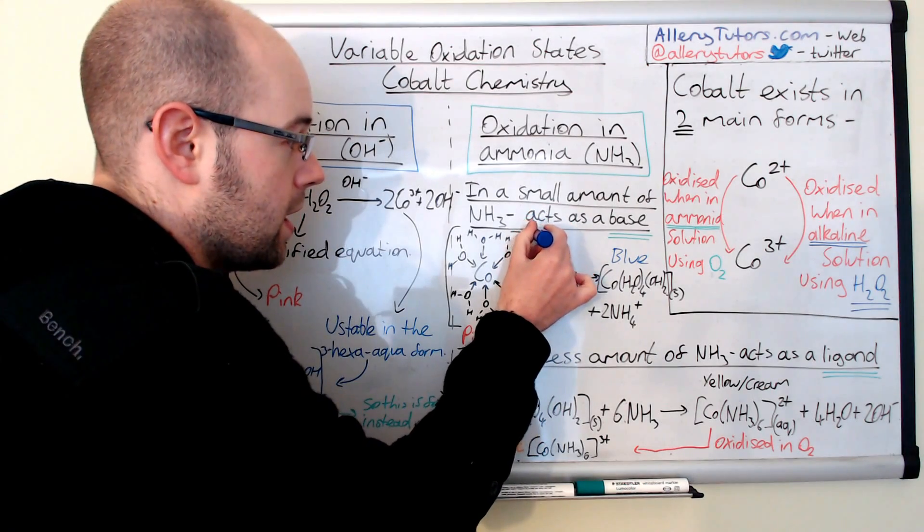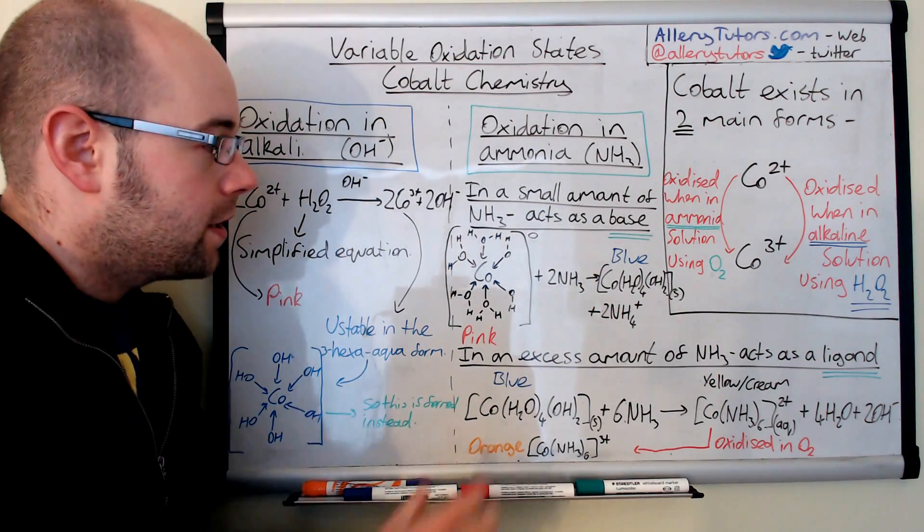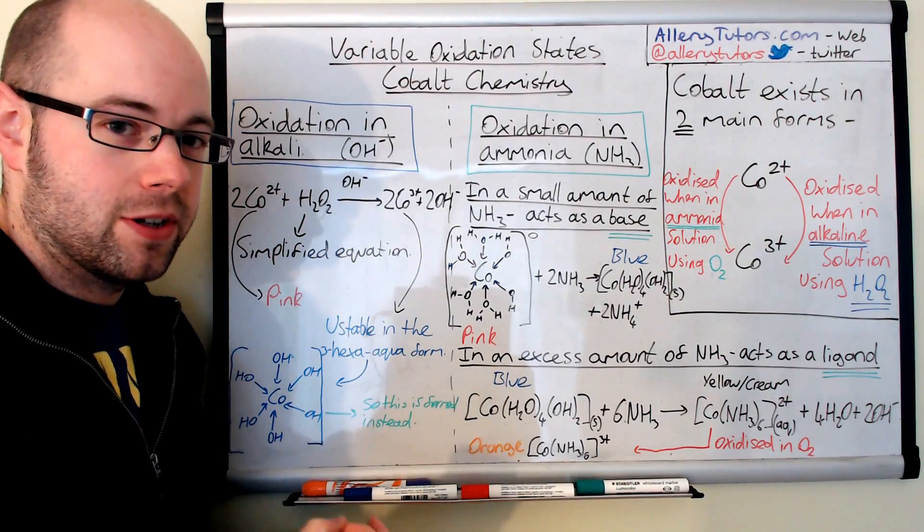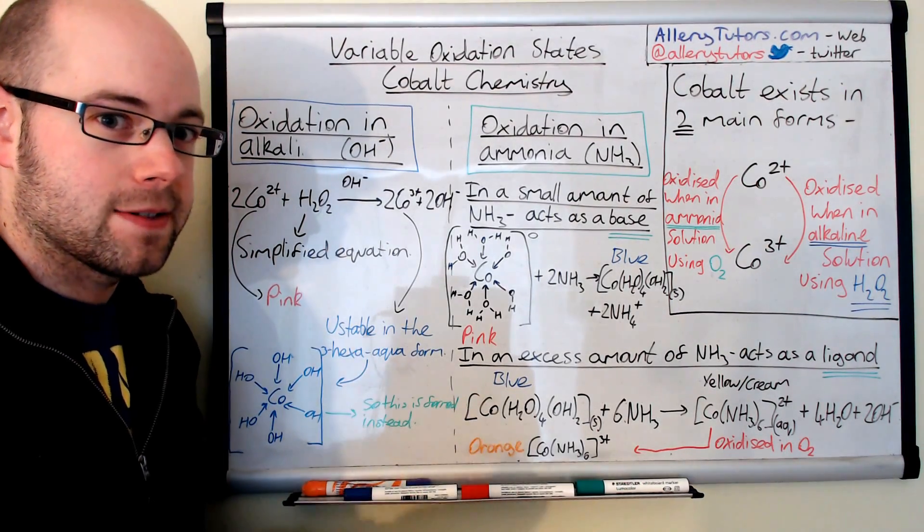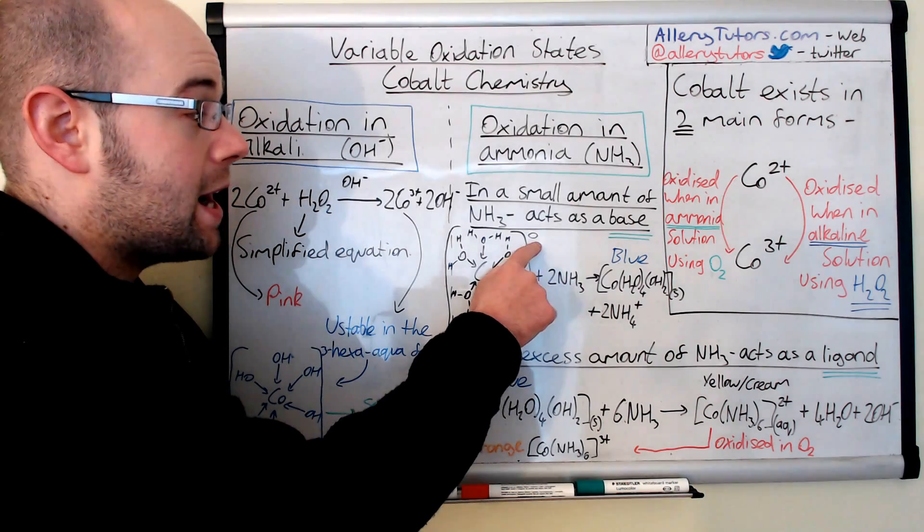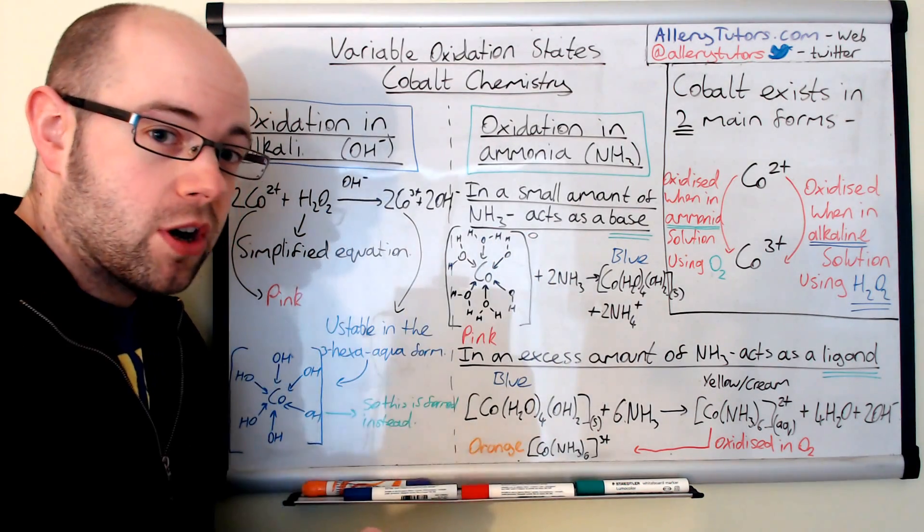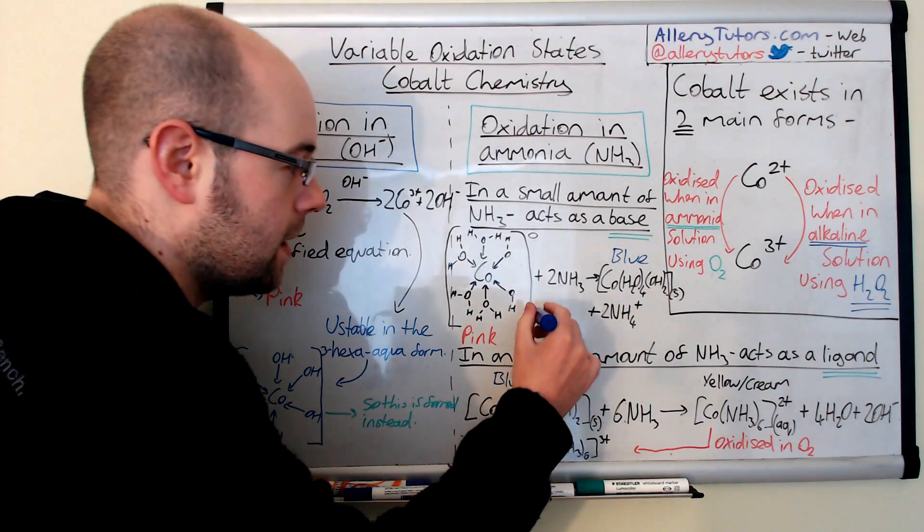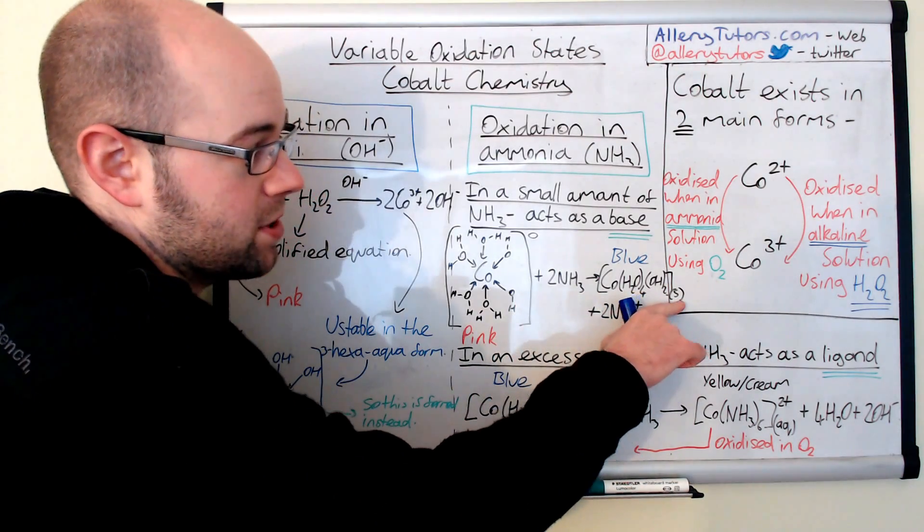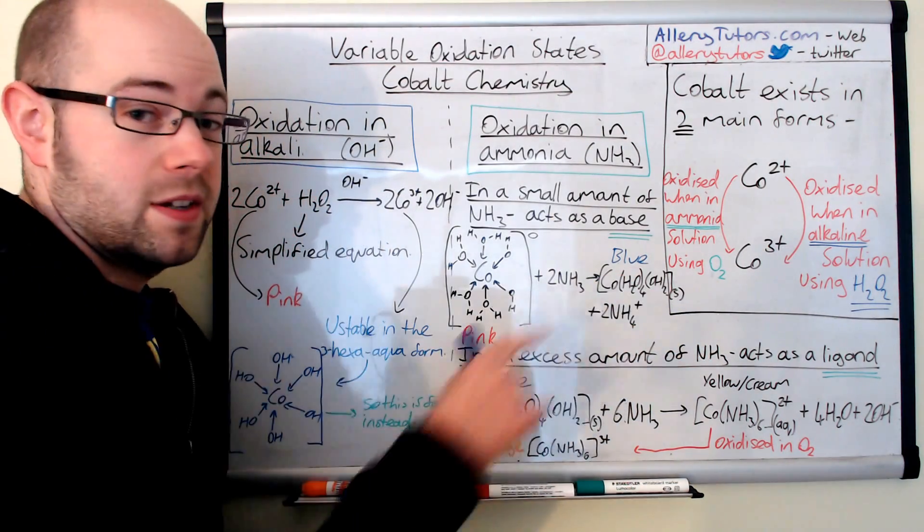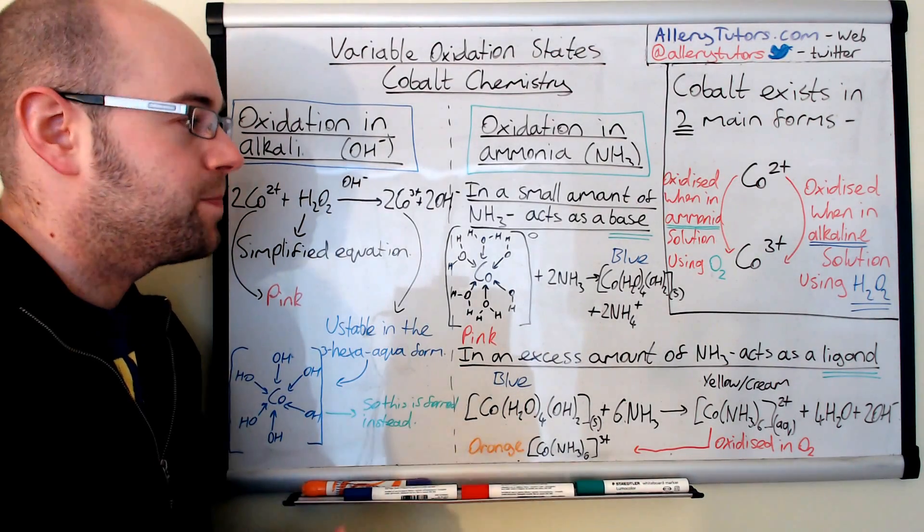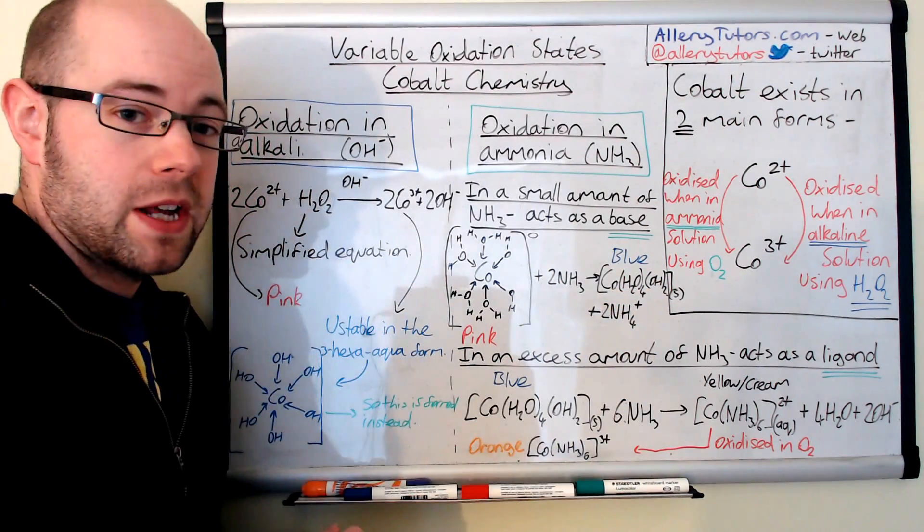Now, complexes with charges are soluble in solution, and so it will exist as a solution. But when we have a complex with no charge whatsoever, effectively, this forms a precipitate, and this precipitates out. And we call this a solid, because it's a precipitate that's forming, well, precipitate, it's just a solid that's formed in solution. And this compound is, effectively, blue.